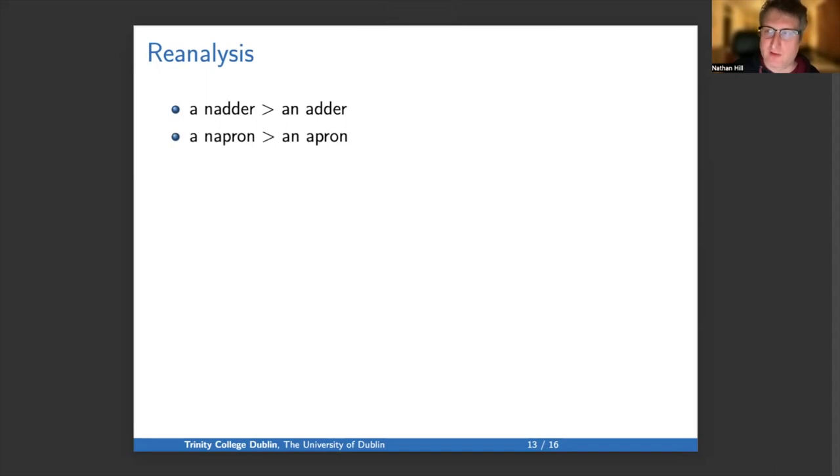Something exactly parallel happened with the word napron, where a napron became an apron. In a third example, the word pea, when it was originally borrowed from French, had an s at the end, even in the singular. So we had a-peas, and that changed into a-pea. That is deletion of the s because it was reanalyzed as a plural suffix in a phrase like the peas.